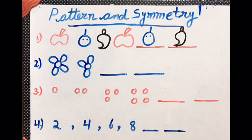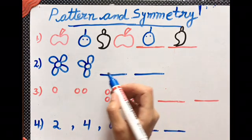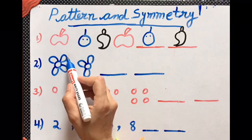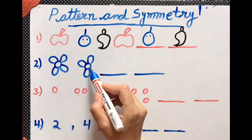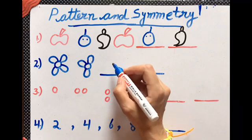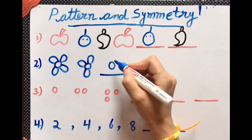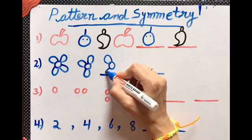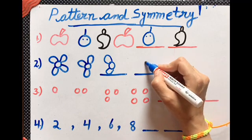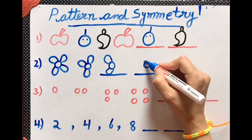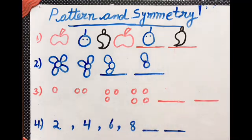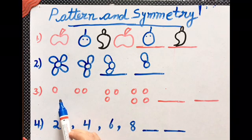Now the next one, let us see what will happen in this. This flower has four petals, this flower has three petals. Now this flower will have two petals, and this will have just one.